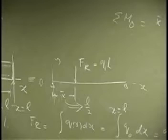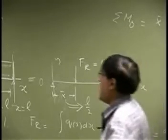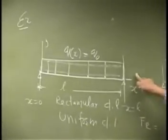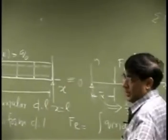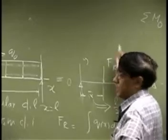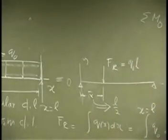So when you have a loading which is rectangular, then you don't really go through all this integration all the time. You just know that if you had a load like this, then you're going to have a load here which is going to be Q0 L, and you're going to place that load right at the middle of the length.